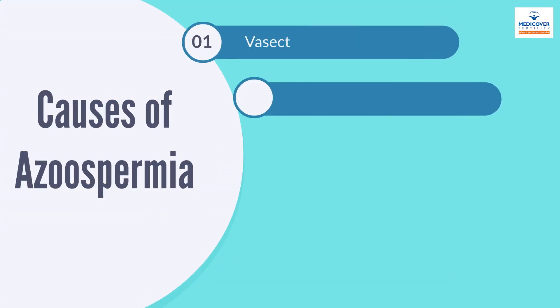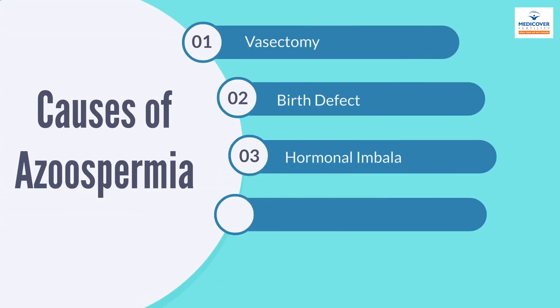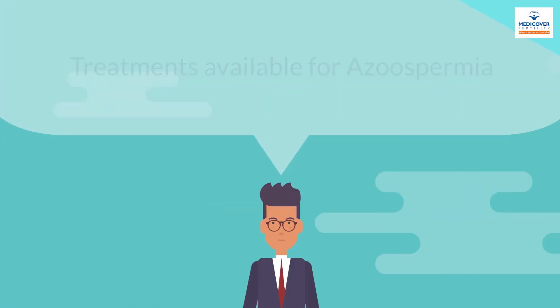Some of the common causes of azoospermia are vasectomy, birth defects, hormonal imbalance, scarring and adhesions on reproductive tubes due to surgery, and varicocele, resulting from enlargement of veins in the scrotum.